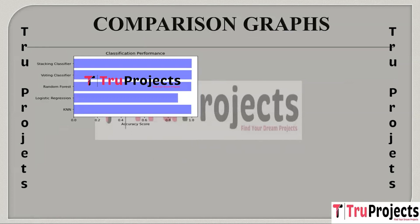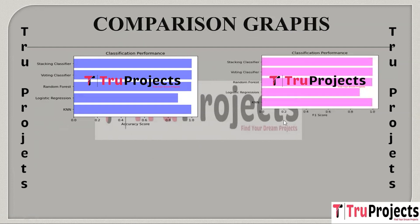This is the horizontal bar graph comparing accuracies of different algorithms. The x-axis shows accuracy scores and the y-axis shows algorithm names. Accuracy measures the overall correctness of predictions, showing the percentage of correctly classified instances. This is followed by the F-score comparison graph, where F-score combines precision and recall into a single metric, balancing accuracy and completeness in predictions.